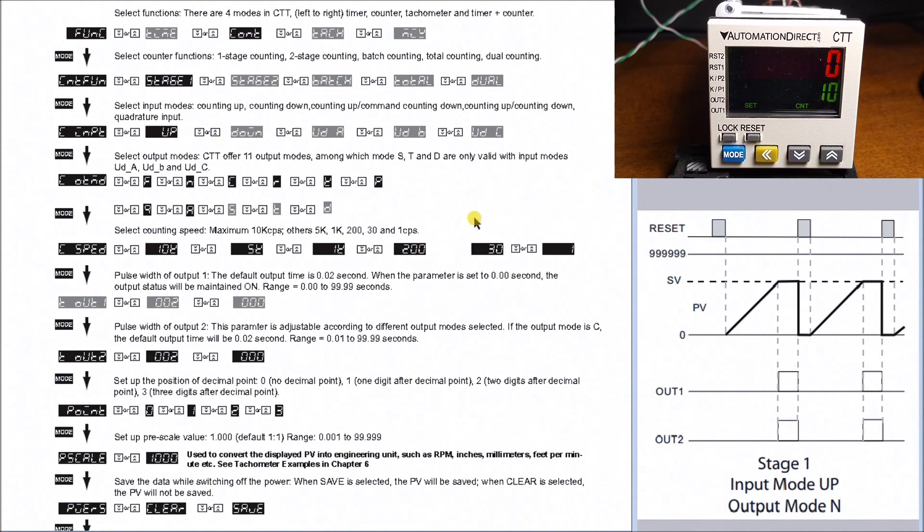We can see right now that we have a set value of 10, so we're looking for 10 counts. What we'll do is we will actually turn on the counting pulse, and when we do, as it counts up it'll go up to 10 and then we should actually hit the output.